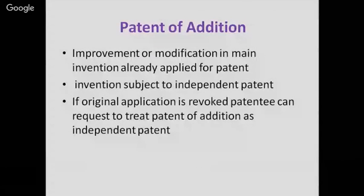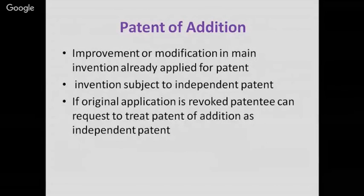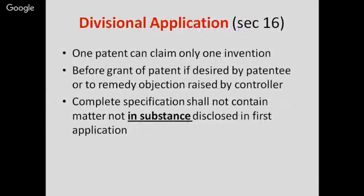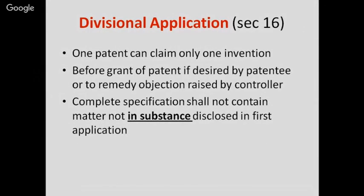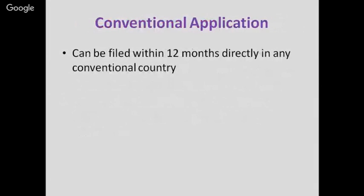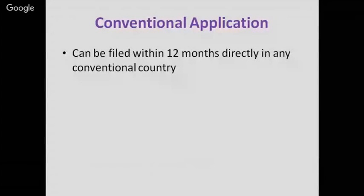A patent of addition covers an improvement or modification in a main invention already applied for or an invention subject to an independent patent. If the original application is revoked, the patentee can request to treat the patent of addition as an independent patent. A divisional application allows one patent to claim only one invention. Before the grant of patent, if desired by the patentee or to remedy an objection raised by the controller, the complete specification shall not contain matter not disclosed in the first application.